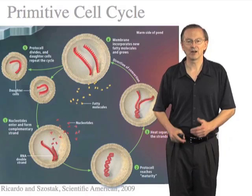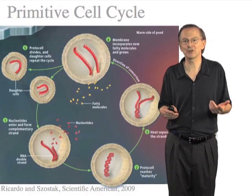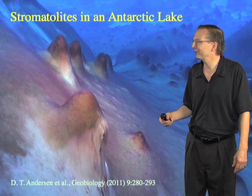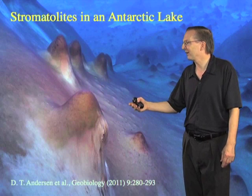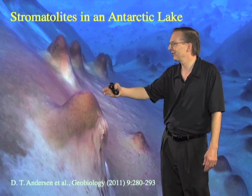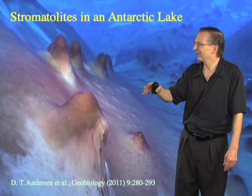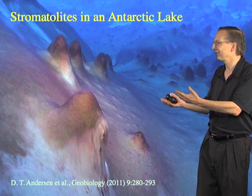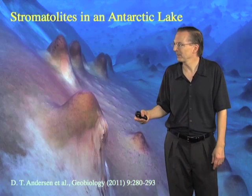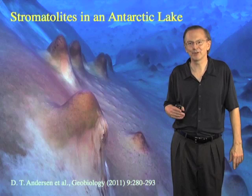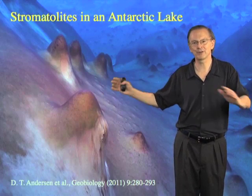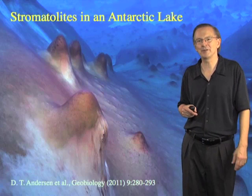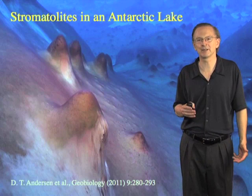This is driving us to talk to geologists and to search for analogs of this kind of environment on the modern Earth. Here is a beautiful image of an Antarctic lake in which you see stromatolites — these mounds are microbial growths on the surface. The reason it's liquid is that there is heat rising up from below geothermally. It's not a perfect analog of the scenario I described, but we would like to find environments like this where hot springs generate convection cells that could drive the whole cycle.